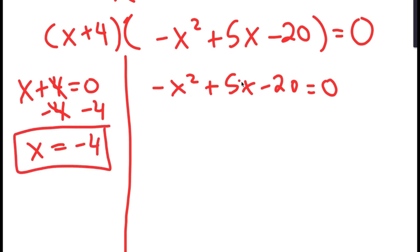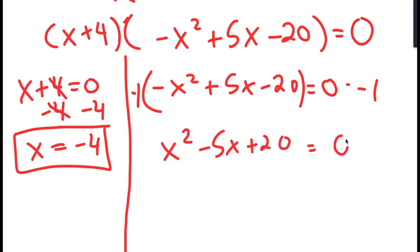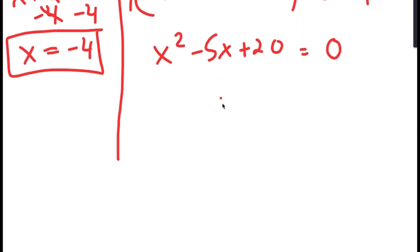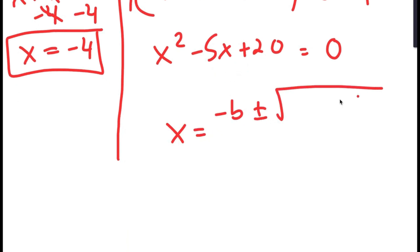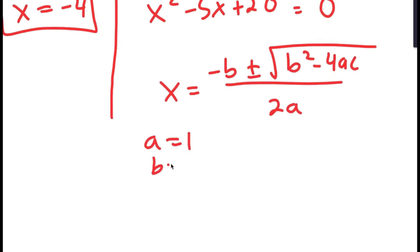For negative x squared plus 5x minus 20 equals 0, there's a negative sign in front of x squared, so I multiply both sides by negative 1 to get x squared minus 5x plus 20 equals 0. To solve this, I'll use the quadratic formula: x equals negative b plus or minus the square root of b squared minus 4ac, all over 2a. Here a = 1, b = negative 5, and c = 20.